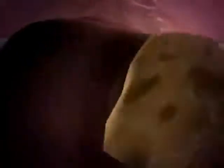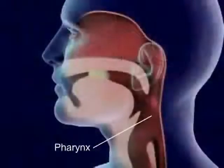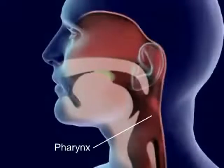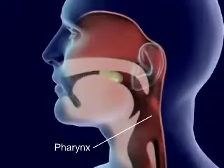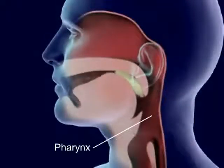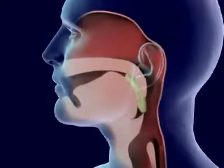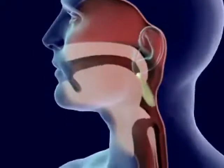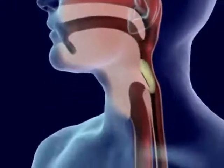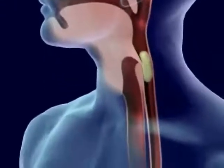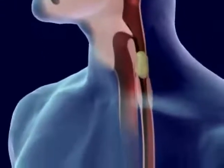Food is forced back into the throat, pharynx, by the tongue. Food in the pharynx stimulates the swallowing reflex. The larynx is pulled upward to meet the epiglottis and seal off the trachea.